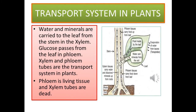Now the transport system of plants. Water and minerals are carried to the leaf from the stem in the xylem. Glucose passes from the leaf in the phloem. Xylem and phloem tubes are the transport system in plants. Phloem is living tissue and xylem tubes are dead.